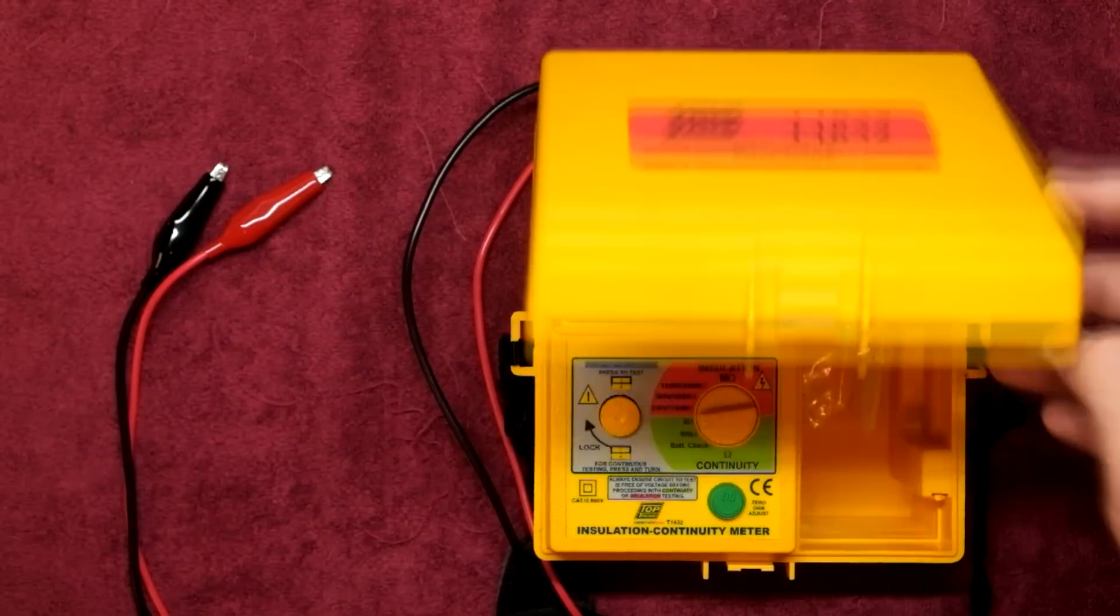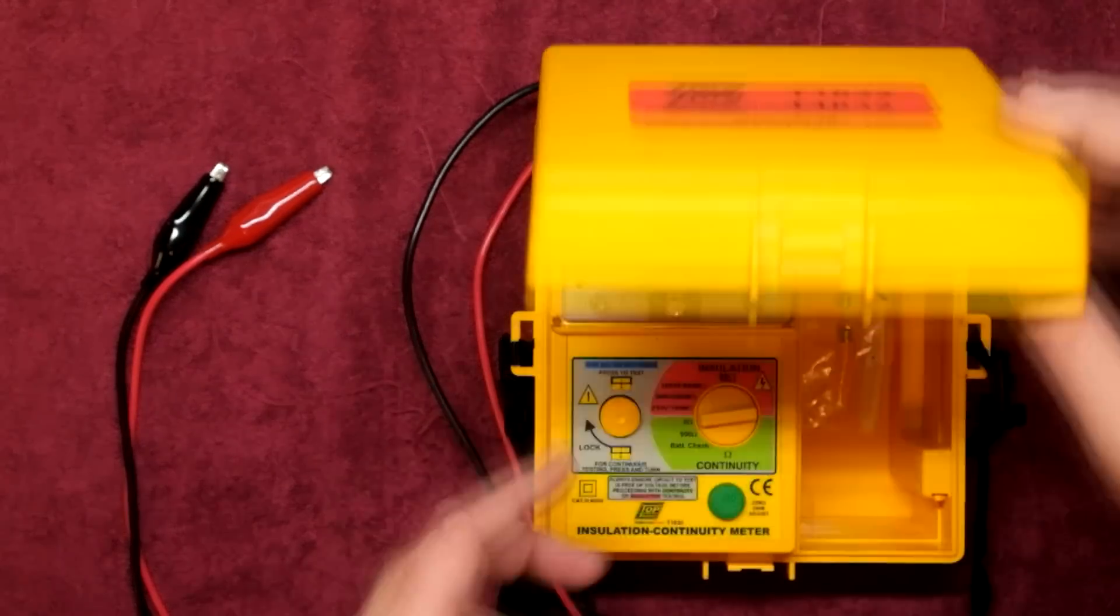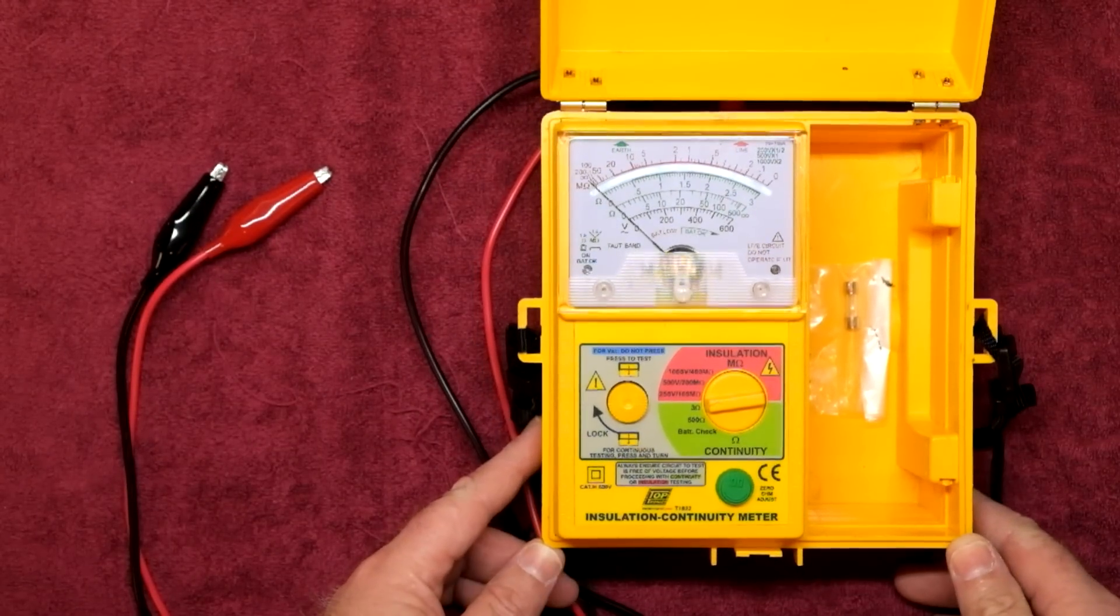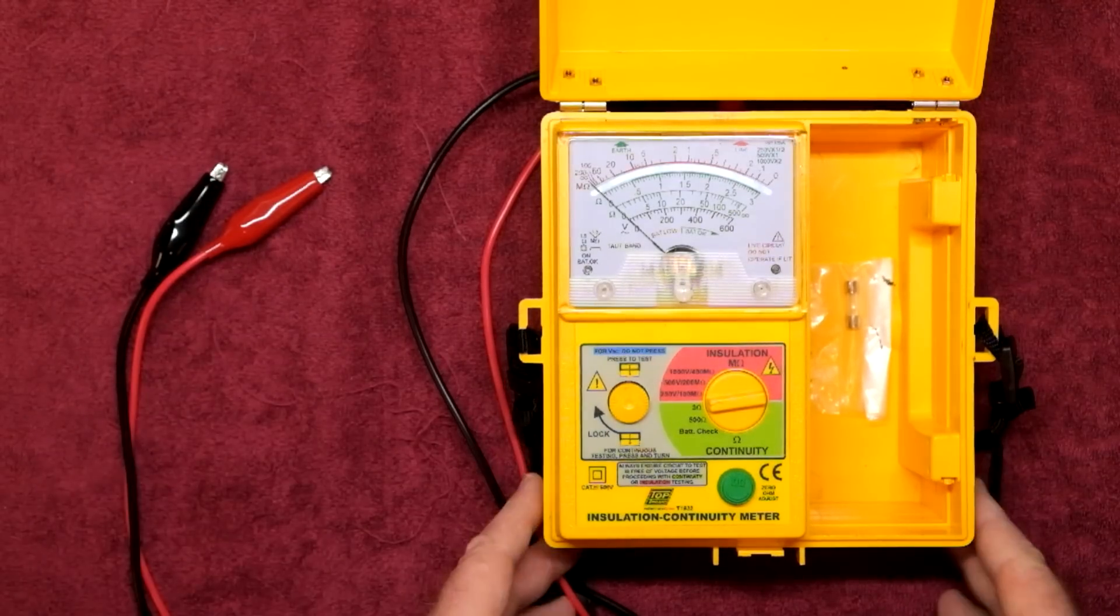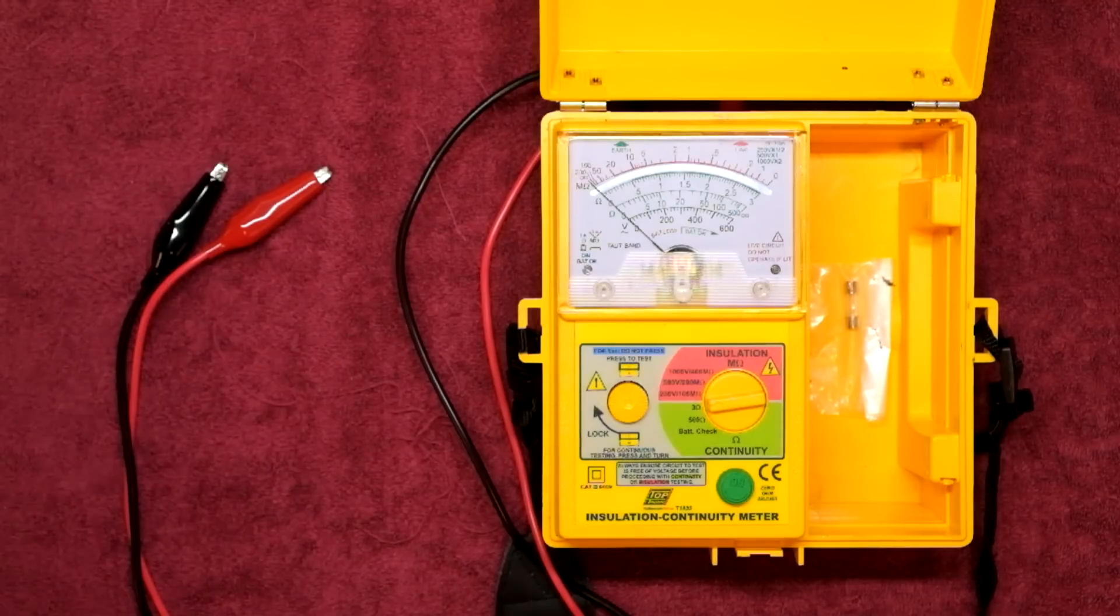Hey YouTube. So here we have the Toptronic T1832 analog insulation continuity tester from Heliment Heights here in South Africa. This specific meter is my current meter that I use for when I'm doing insulation resistance tests on anything. Yes you get fancier digital ones but this one's still working and it's got a lifetime warranty so I couldn't be bothered really buying anything else.